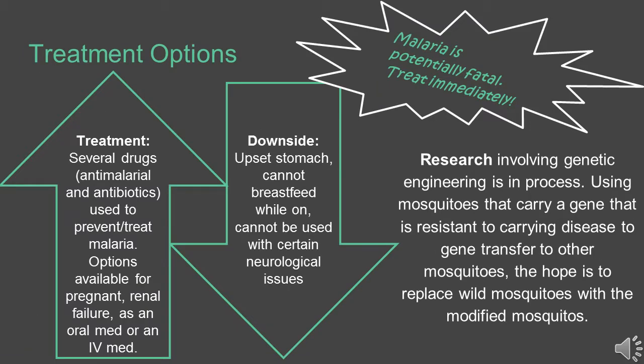The treatment of malaria includes several drugs — anti-malarials and antibiotics used together for the prevention or treatment of malaria. There are options among these drugs available for pregnant women and those with renal failure. They can be given as oral or IV medication. The downsides include upset stomach, cannot be breastfed while using, and cannot be used with certain neurological issues. There are other downsides more specific to individual drugs that your doctor would explain.